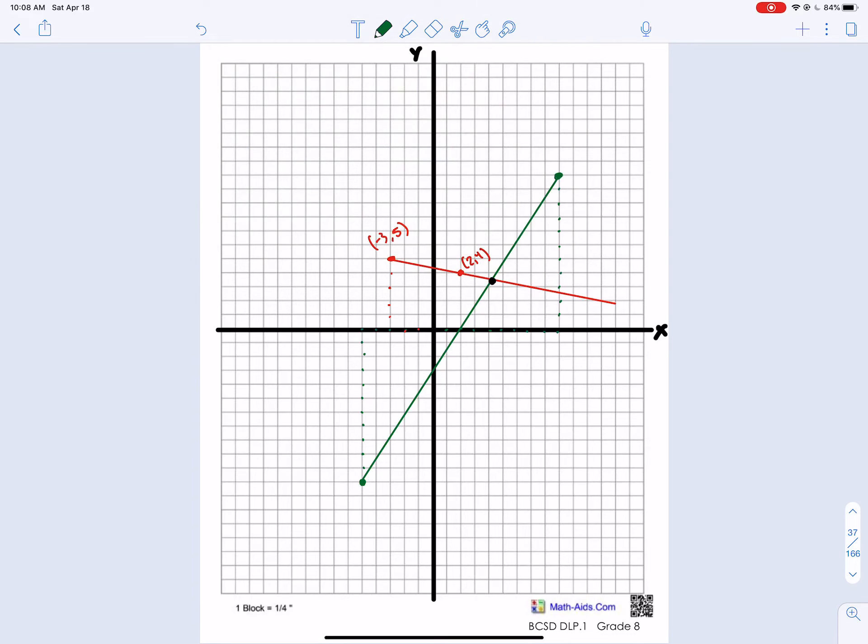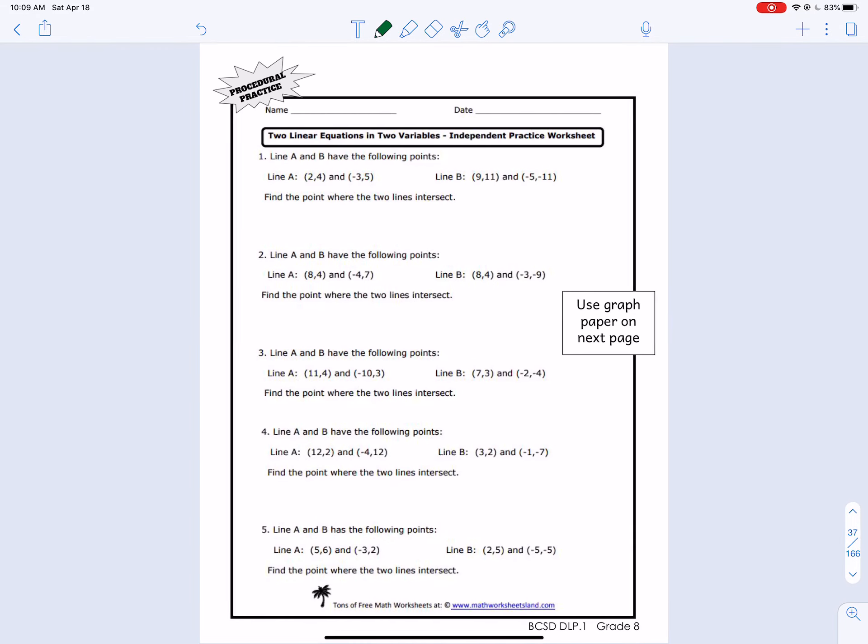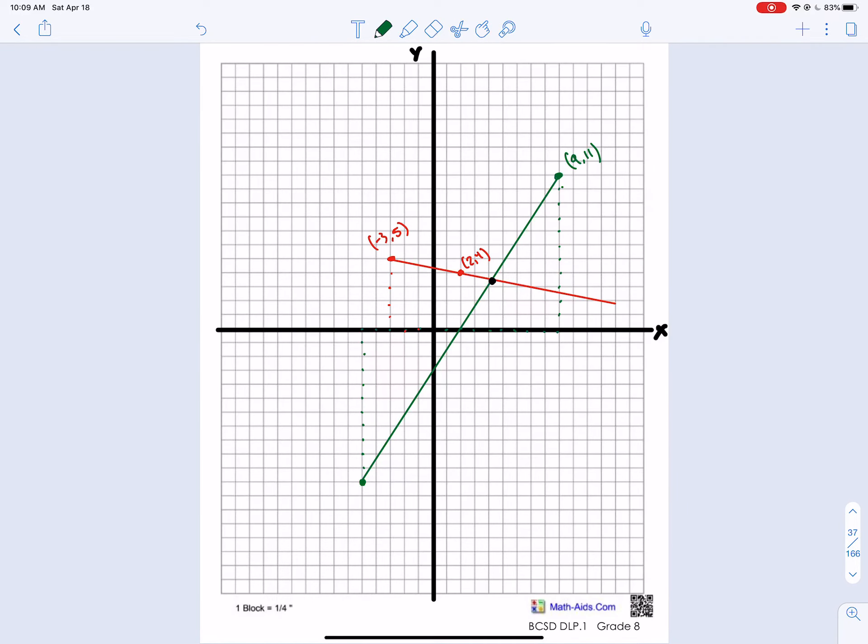And it's kind of in between the grid. So let's see if we can estimate. So it's this point right there. And let's just double check our coordinates for these points, just to make sure we didn't make a mistake. So 2, 4. 2, 1, 2, 3, 4. This is 2, 4. And this one's at 1, 2, 3. 3, 1, 2, 3, 4, 5. Negative 3, 5. Make sure that's right. Yep. And then 9, 11. 1, 2, 3, 4, 5, 6, 7, 8, 9. 9, 11. And then negative 5, negative 11. Negative 5, negative 11. 1, 2, 3, 4, 5. And then 1, 2, 3, 4, 5, 6, 7, 8, 9, 10, 11. Negative 5, negative 11. Okay, so that looks right.